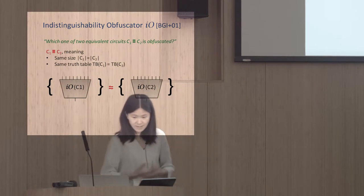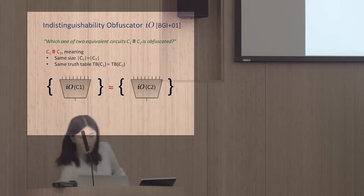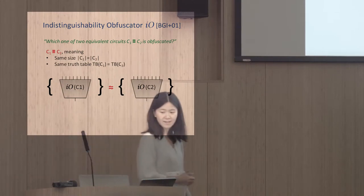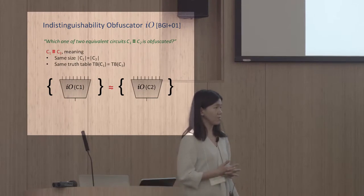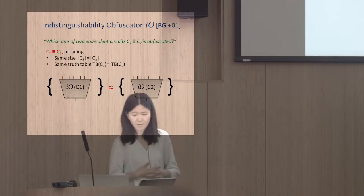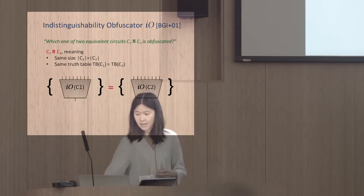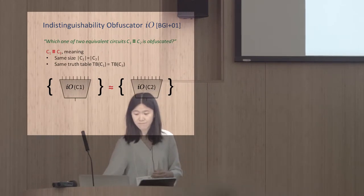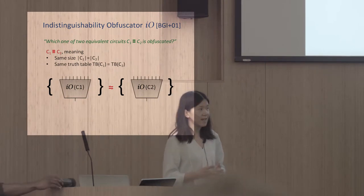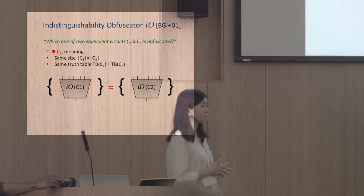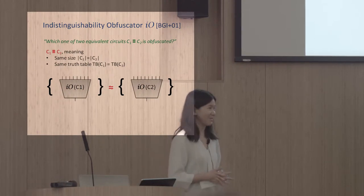Since the proposal of this notion, IO, in 2001, it has been a long-standing goal in cryptography to actually achieve this notion. Surprisingly, for a long time there was no progress at all — until 2013, when Garg et al. introduced the first candidate IO construction. As you can see today, we really have more than a dozen constructions.